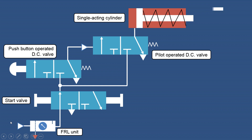Let us trace the circuit once again. Air from the compressor enters the FRL unit. The start valve is in the left envelope mode, and the push button operated direction control valve, which is a normally closed (NC) valve, is in the right envelope — the block position. Air from this line enters the right envelope of the pilot operated DC valve, which is also in the block position since the push button has not been operated. Therefore air is not admitted into the single acting cylinder, and the spring force causes retraction of the piston. Air from that side exhausts to atmosphere.